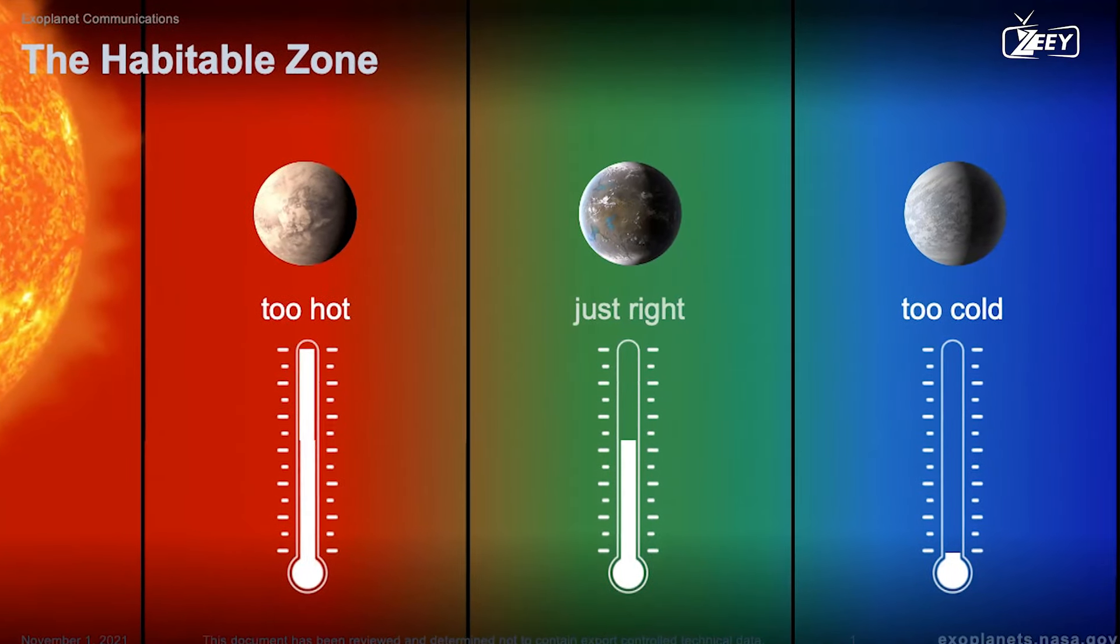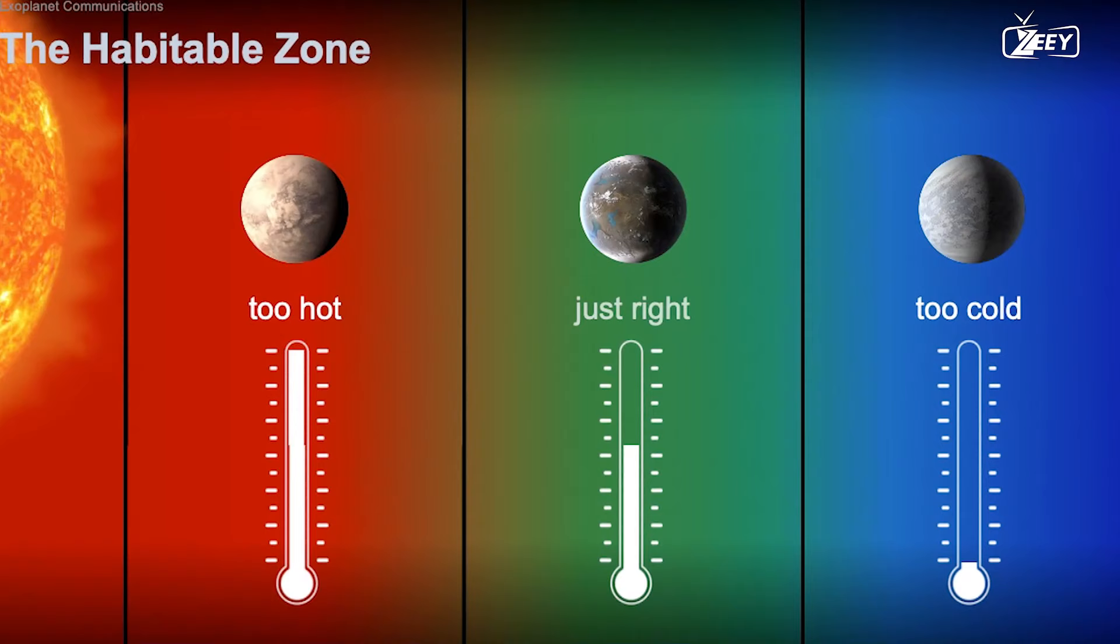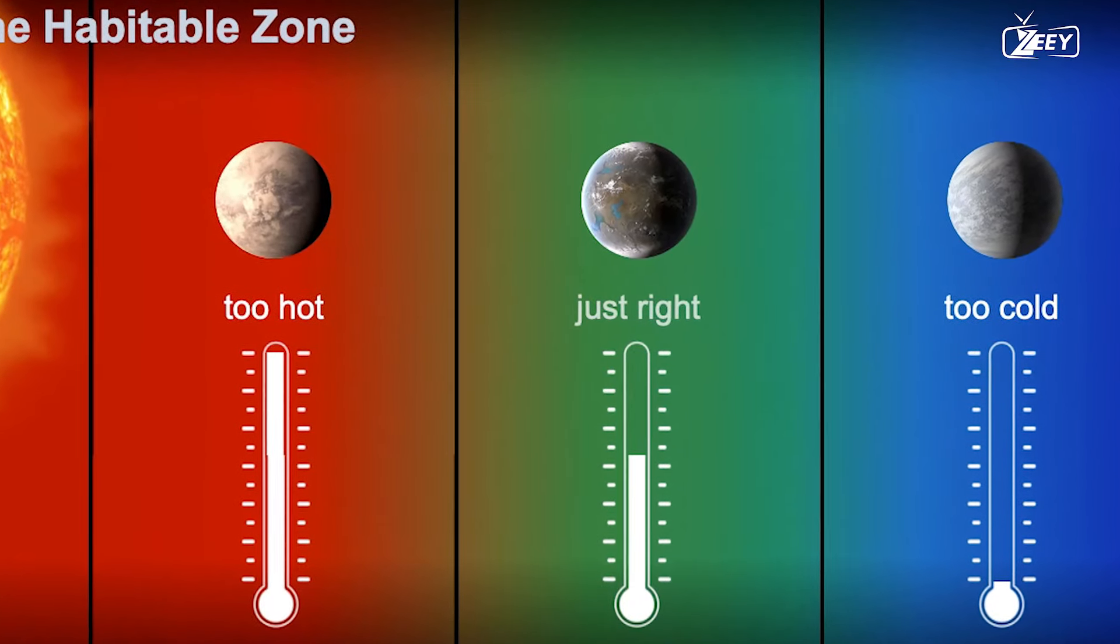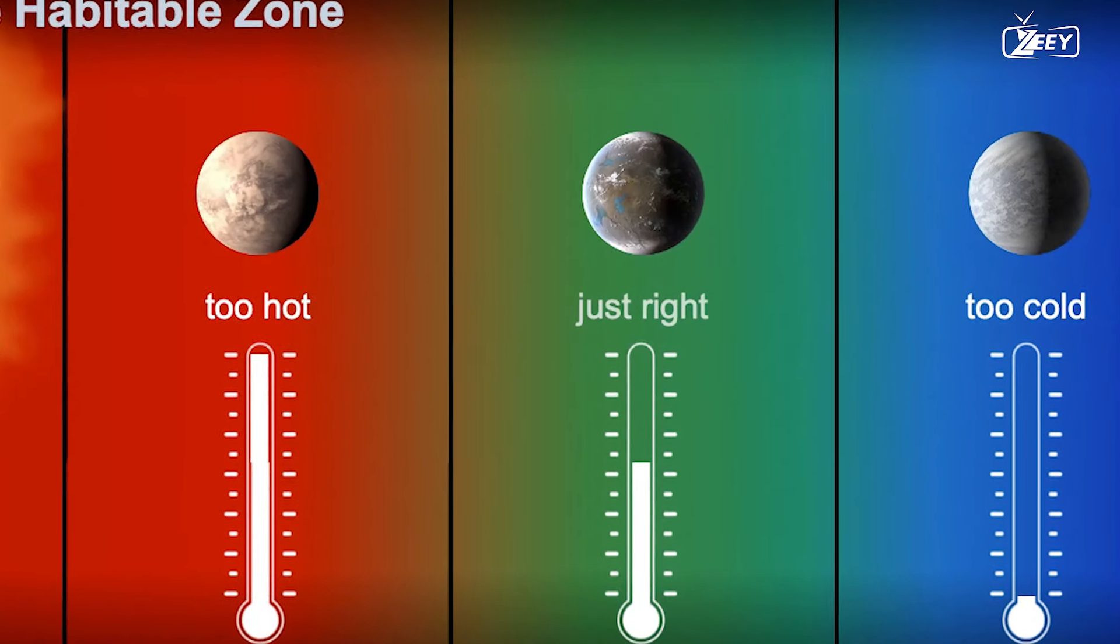If Earth were closer to the Sun, like Venus is, it would be too hot for liquid water to exist on its surface, and if it were further away, as Mars is, it would be too cold.